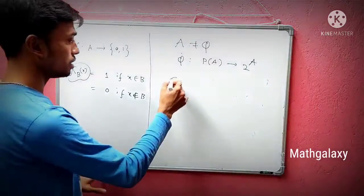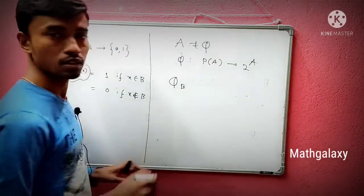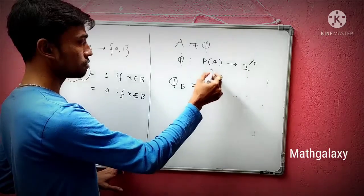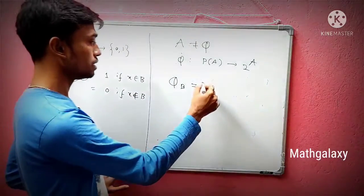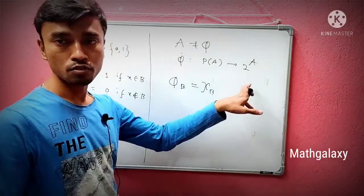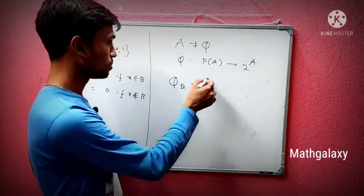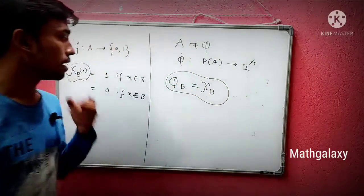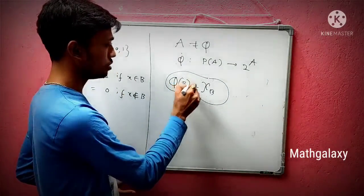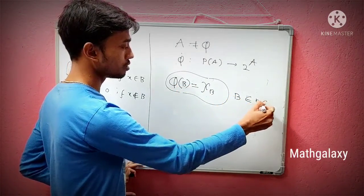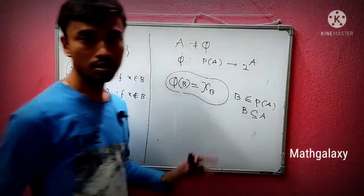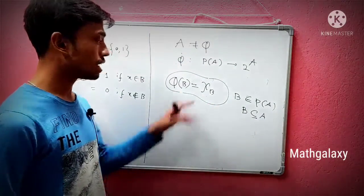From here, we define the function φ like this: φ(B) = χ_B. You take a set B from the power set of A and define it to be χ_B. You can clearly see that χ_B is a function from A to {0, 1} — so χ_B belongs to 2^A.